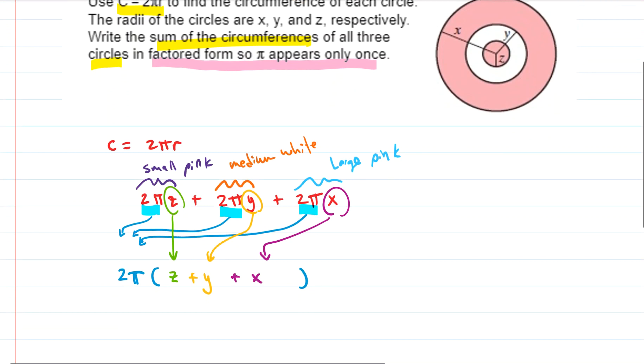So that actually would be the answer, right? We've written the sum of all three circumferences and we've written it in factored form so that π only appears once. We have 2π times z plus y plus x.